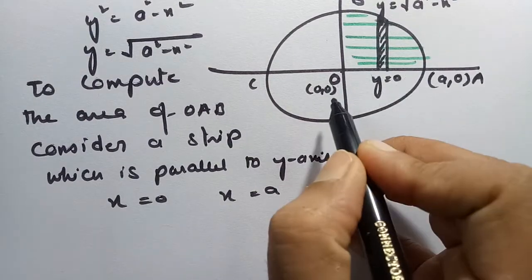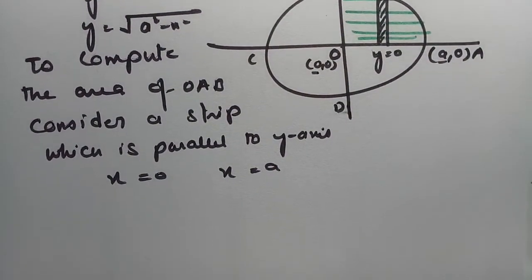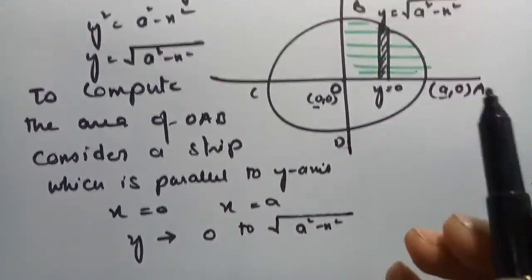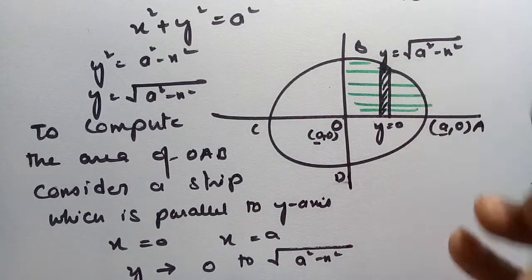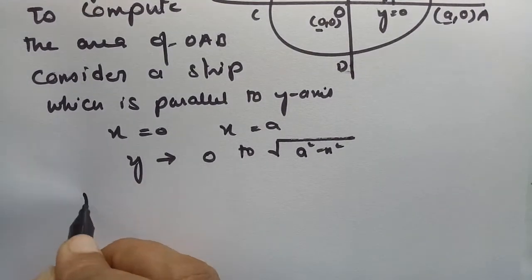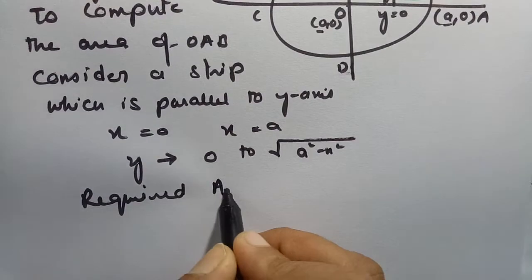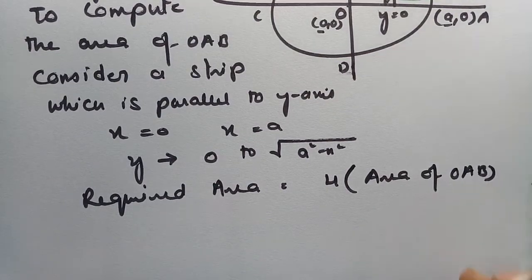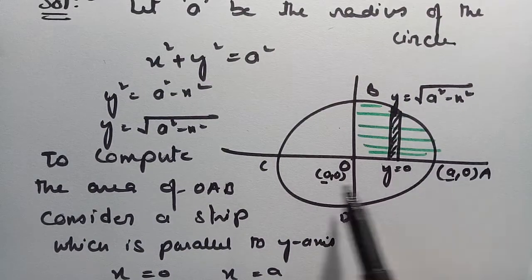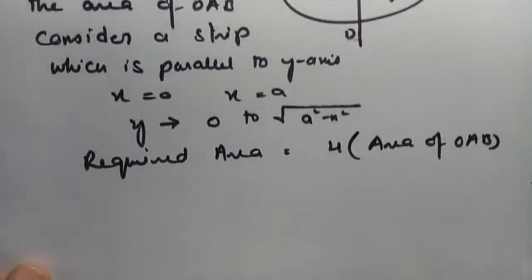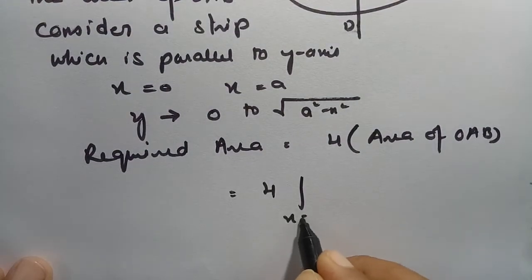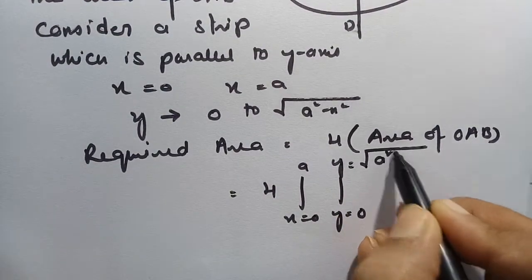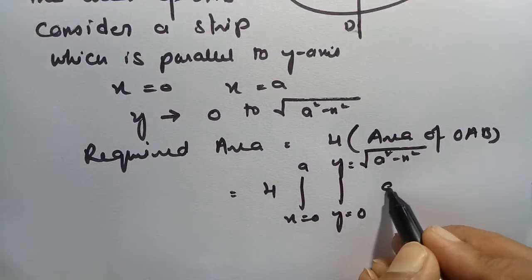The x-coordinates range from x = 0 to x = a, so these are our x limits. The y limits vary from y = 0 to y = √(a² − x²). Therefore, the required area of the circle equals 4 times the area of OAB, since OAB is a quarter part — multiplying by 4 gives the total area of the circle.